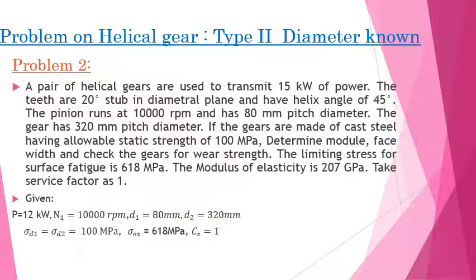In this session, we are going to see the second problem on helical gears. This is of Type 2, where the diameter is given. A pair of helical gears transmit 15 kW of power. The teeth are 20 degree stub in the diametral plane with a helix angle of 45 degrees. The pinion runs at 10,000 RPM with 80 mm pitch diameter; the gear has 320 mm pitch diameter. Gears are made of cast steel with allowable static strength 100 MPa. The limiting stress for surface fatigue is 618 MPa, modulus of elasticity is 207 GPa, and service factor CS = 1.